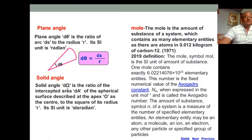Again, the solid angle - it is the symbol for steradian - is the ratio of the intercepted area dA of the spherical surface described at the apex as the center to the square of its radius r. Its SI unit is steradian. So here, if its area is dA and the solid angle is dΩ (steradian), and the radius is r, then the steradian equals dA by r².